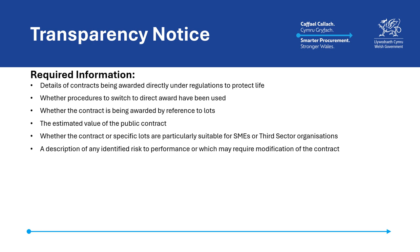A description identifying any risk that the contracting authority considers could jeopardise the satisfactory performance of the contract, but, because of its nature, may not be addressed in the contract as awarded. And a description of any risk that may require a subsequent modification to the contract under paragraph 5 of Schedule 8 of the Act, which covers modification of contracts following the materialisation of a known risk.